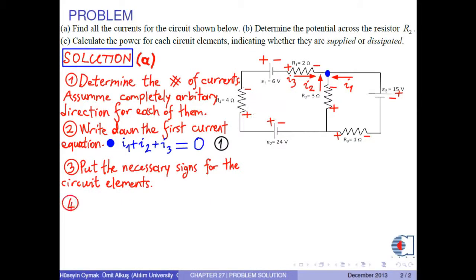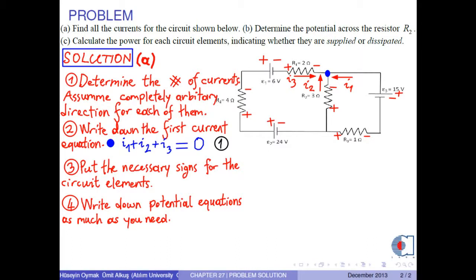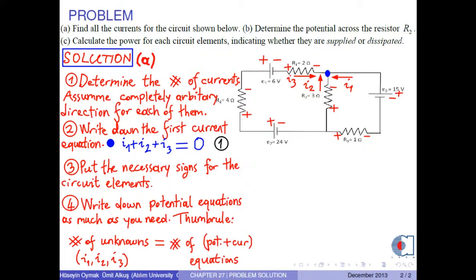Step 4: Write down potential equations as needed. There is a rule here: the number of unknowns — I1, I2, and I3 — is 3. Therefore, we need three potential and current equations total. One of these has already been found as equation 1, so we need two more voltage equations.